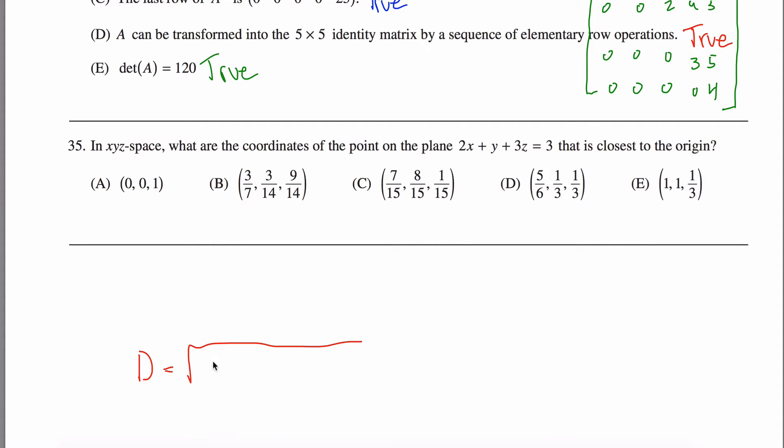It's kind of just from the Pythagorean theorem. You can generalize that to three space to say that the distance between two points x1, y1, z1 and x2, y2, z2 is given by this formula.